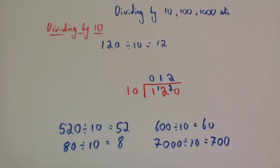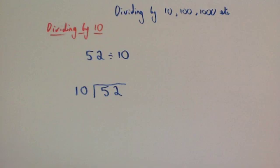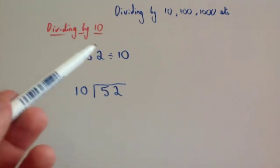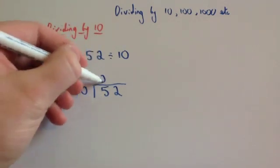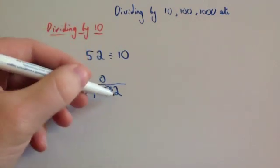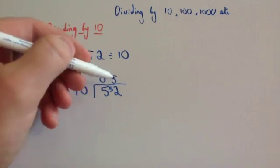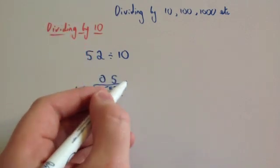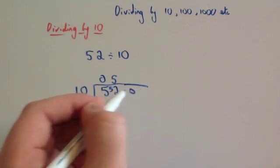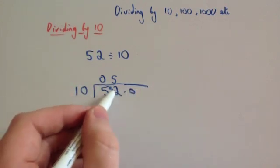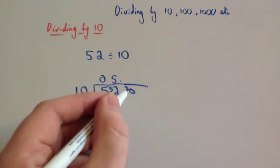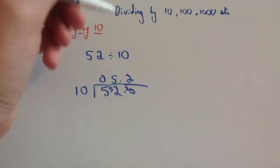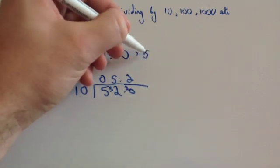That's only if it ends in a zero. So let's have a look at some numbers that don't end in a zero and look at how we divide those by 10. So we're going to look at dividing 52 by 10. 10 into 5 doesn't go, remainder 5. 10 into 52 goes 5 times, remainder 2. Whenever you're dividing and you've got a remainder, you carry on the division and put on some zeros. So 10 into 20 goes twice. So 52 divided by 10 is equal to 5.2.